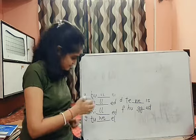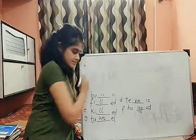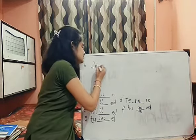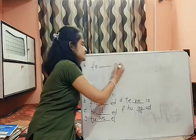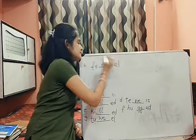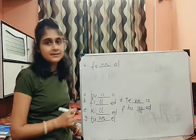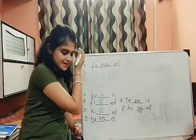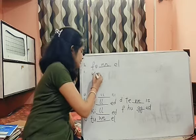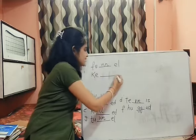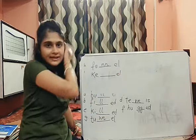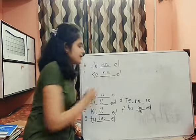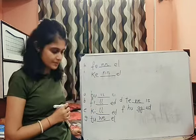Next we have H: F U dash E L. F U double N E L. Funnel. Then I: K E dash E L. Kennel — K E double N E L.